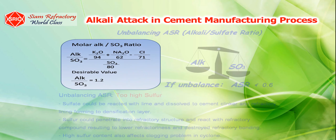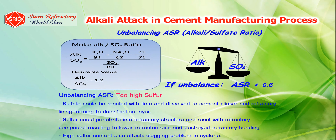On the other hand, using fuels that contain high levels of sulfur — such as high sulfur coke, lignite, petroleum coke, and alternative fuels like used tires — may also cause an imbalance in the A-S ratio, as these kinds of fuels cause the volume of sulfur to remain exceptionally high within the system.